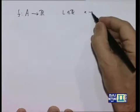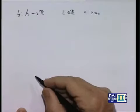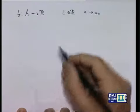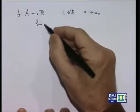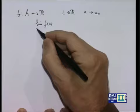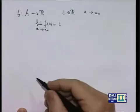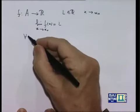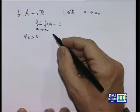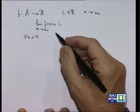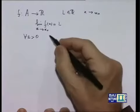Quando x tende a x con 0, supponendo che x con 0 sia un punto di accumulazione dell'insieme A, si dice che f tende a l, e si scrive: il limite di f(x) per x che tende a x₀ uguale a l, se comunque venga scelta una tolleranza epsilon maggiore di 0, è possibile associare a questo epsilon un numero delta, ancora positivo, dipendente da epsilon, che indicheremo delta di epsilon.